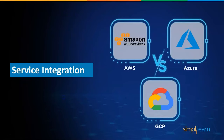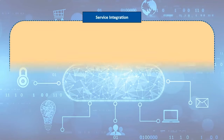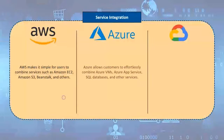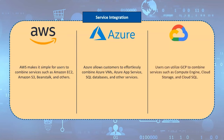Now let's move on to the service integration of these cloud platforms. Service integration is a set of tools and technology that connects different applications, systems, repositories, and data and process interchange in real time. AWS makes it simple for users to combine services such as Amazon EC2, Amazon S3, Beanstalk, and others. Azure allows customers to effortlessly combine Azure VMs, App Service, SQL databases, and other services. Users can utilize GCP to combine services such as Compute Engine, Cloud Storage, and Cloud SQL.